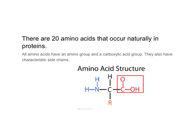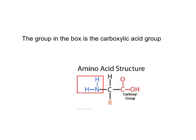Quite frequently these amino acids are modified in certain ways. All amino acids have an amino group and a carboxylic acid group, and they also have characteristic side chains, denoted with an R for side chain. The group in the box here is a carboxylic acid side chain.